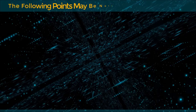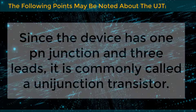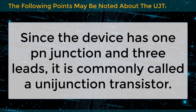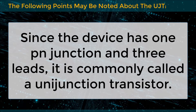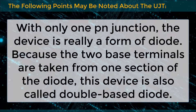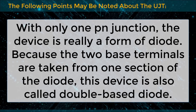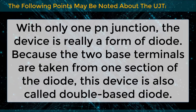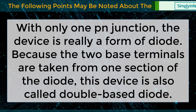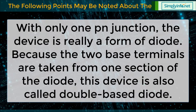The following points may be noted about the UJT. Since the device has one PN junction and three leads, it is commonly called a Unijunction Transistor. With only one PN junction, the device is really a form of diode, because the two base terminals are taken from one section of the diode, and this device is called a double-based diode.